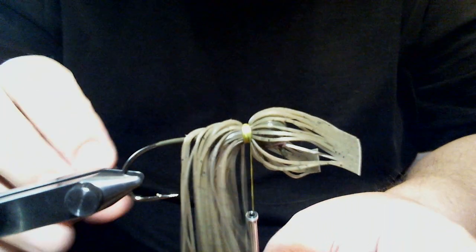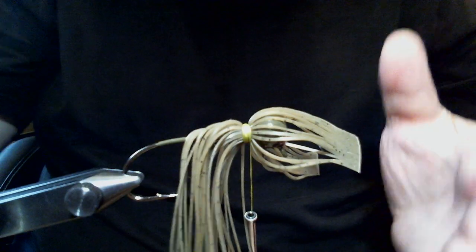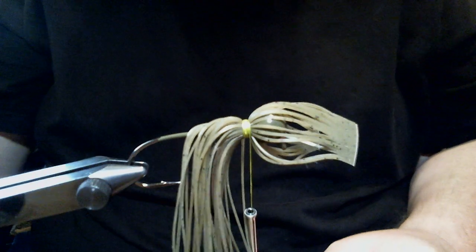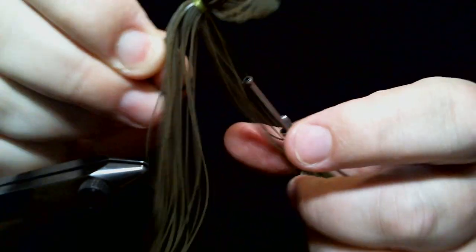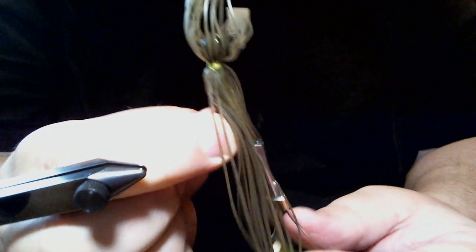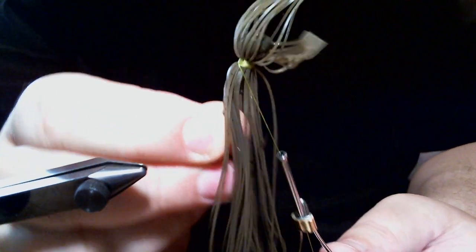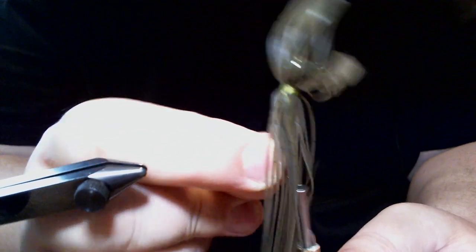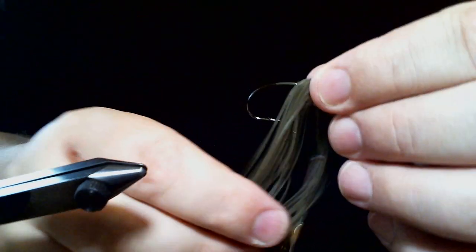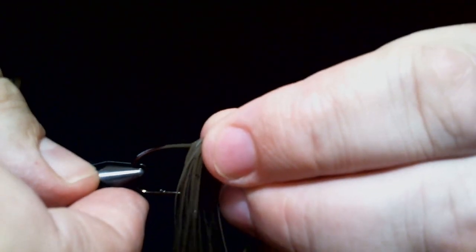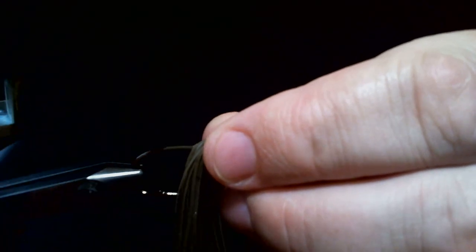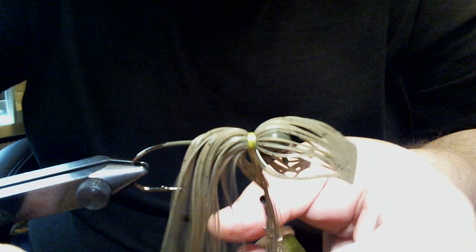Now, I'm going to take this out of the vise just to show you pretty much what we got here. And that's basically a plain old green pumpkin jig. Nothing to it. Nothing fancy. It's hard to see yet. But just straight one color. And the reason I'm doing it straight one color is because I'm going to add an accent color to this.